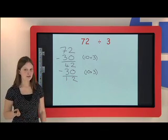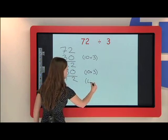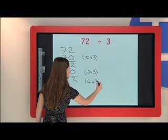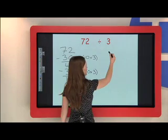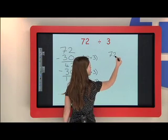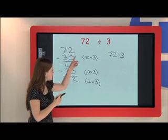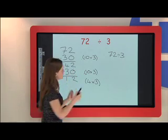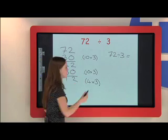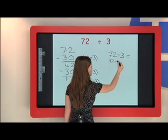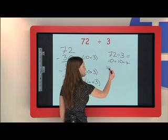Then I think, hang on, I know what 12 is. 12 is 4 times 3, so I can write that next to the side. Now we're finished and we can work out my answer. We know it's 72 divided by 3, and we just add up the numbers in this column here. So we know it equals 10 plus 10 plus 4, which equals 24.